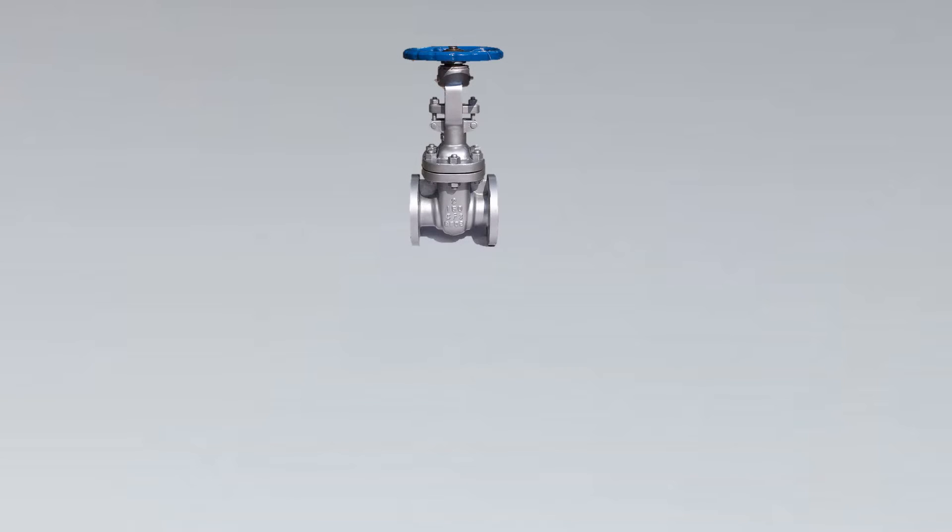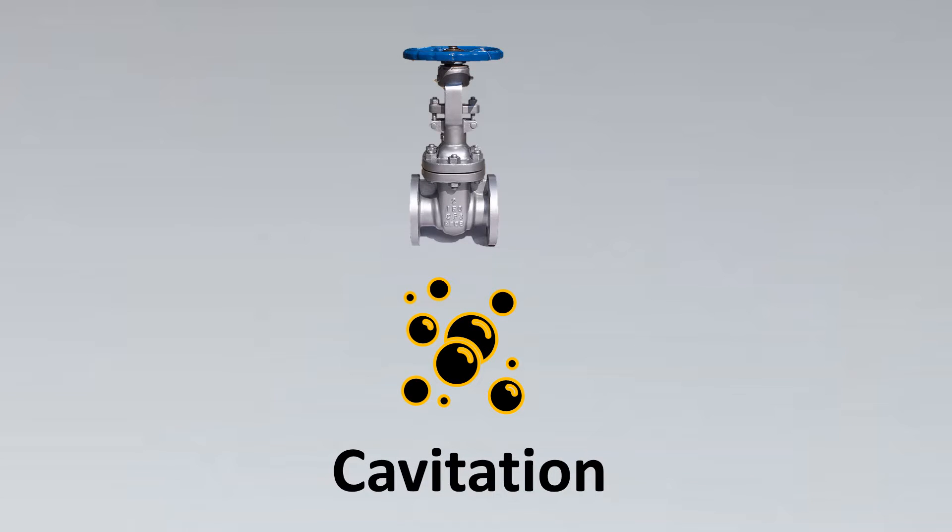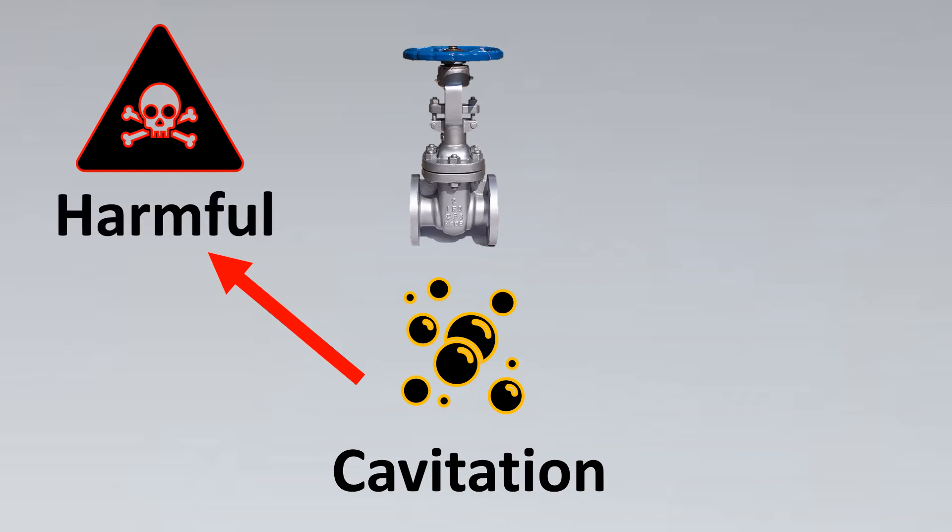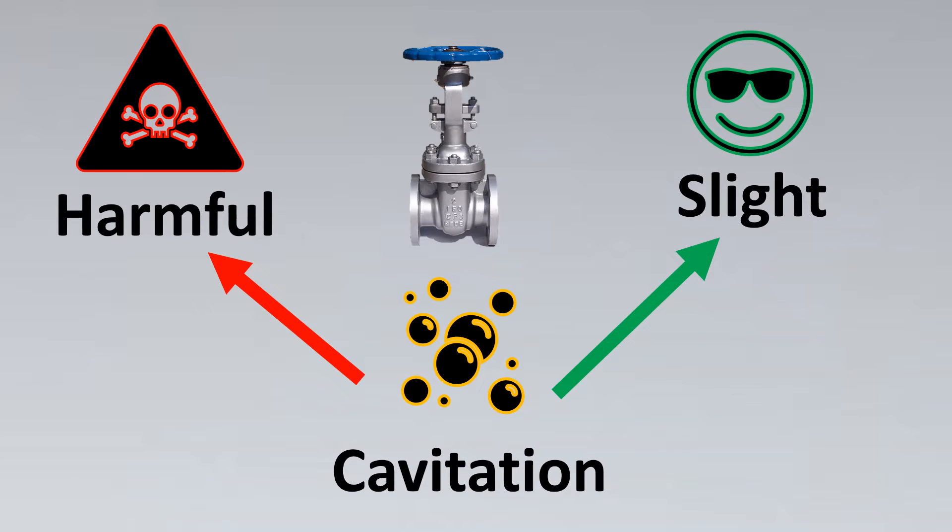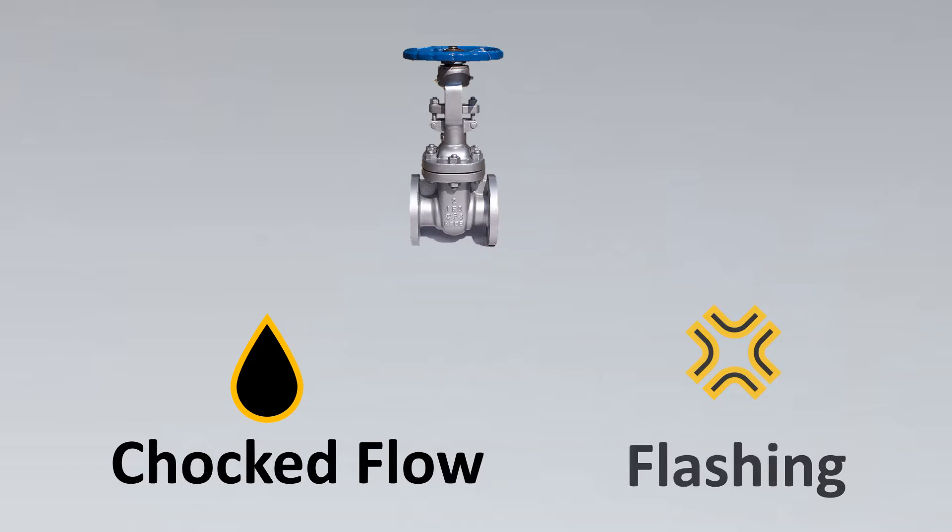If it's a control valve and cavitation is happening, the sigma value, which is also called the cavitation index, can help us identify whether it's harmful cavitation or very slight cavitation that we can easily handle. It also helps us to know whether the flow is choked flow, whether there's flashing, and what precautionary measures we can take against it.